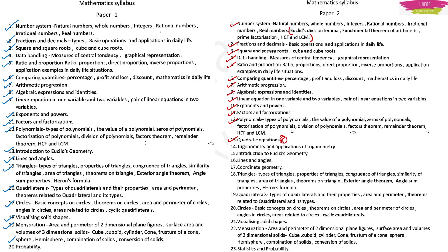Trigonometry and Applications of Trigonometry are also added in Paper 2 — Paper 1 did not have this. Then we have Introduction to Euclid's Geometry, Lines and Angles, Coordinate Geometry, Triangles, Quadrilaterals, Circles, Visualizing Solid Shapes, Mensuration, Statistics and Probability. Statistics was not there in Paper 1, so they have specifically added this for Paper 2. So this is our syllabus for Karnataka TET Mathematics, and we can see that there is not much difference in the syllabus between Paper 1 and Paper 2.